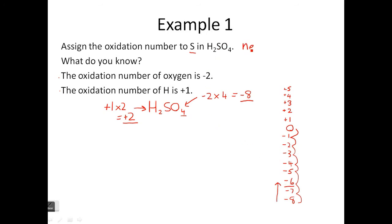Now, H2SO4 is neutral. There's no charge. There's no positive, there's no negative charge. So we want to get back to zero. We want to get back to here. So to get back to here, we have to go up six. So that means that the oxidation number of the S, the sulfur there, is plus six.